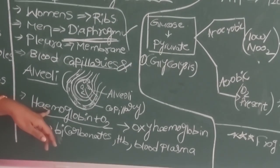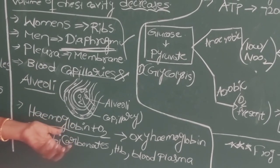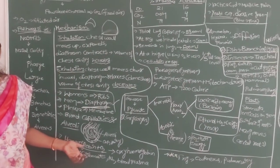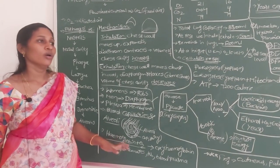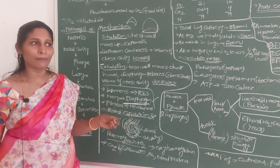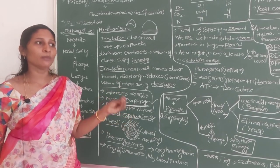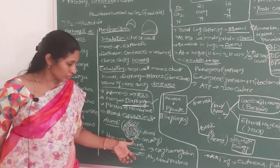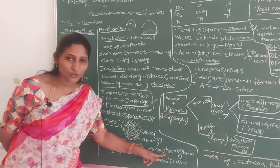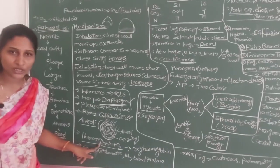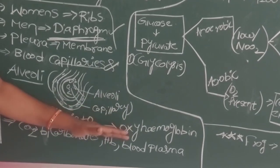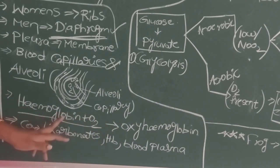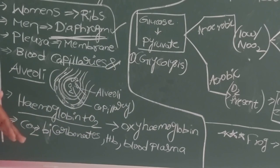Blood is red because of hemoglobin, a red pigment in red blood cells. Its structure resembles chlorophyll, but hemoglobin contains iron as the central atom while chlorophyll contains magnesium. When oxygen enters the blood capillaries from the alveoli, hemoglobin immediately combines with oxygen to form oxyhemoglobin. This oxyhemoglobin is transported via blood to the cells, where it separates back into hemoglobin and oxygen for cellular respiration.